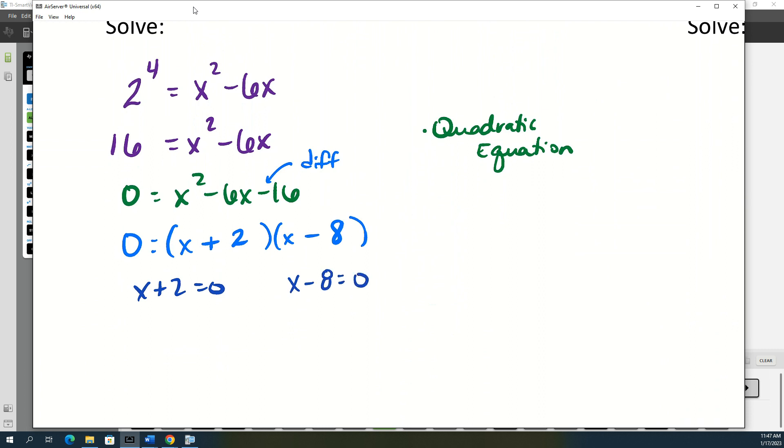So x plus 2 equals 0 or x minus 8 equals 0. And that's originally going to give us two answers.